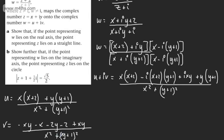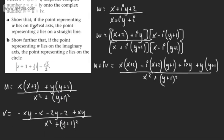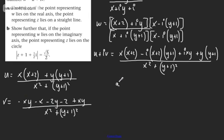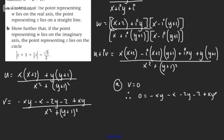We're now in exactly the place we need to solve both problems. In part A, it says show that if the point representing W lies on the real axis, the point representing Z lies on a straight line. If W lies on the real axis, V must equal 0. Therefore the numerator equals 0: 0 = −XY − X − 2Y − 2 + XY. The XY terms cancel, giving X + 2Y + 2 = 0. That is the straight line in the Z-plane.